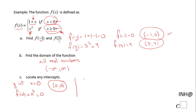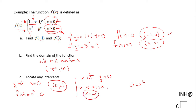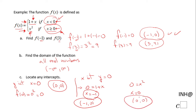For the x-intercepts, we set f of x equal to 0, giving us two equations: 0 equals 1 plus x for the first piece, and 0 equals x squared for the second piece. Solving the first equation, x equals negative 1. Since negative 1 is less than 0, it belongs to the first piece, so (−1, 0) is an intercept. Solving the second gives x equals 0, and since 0 belongs to the second interval, (0, 0) is another intercept.